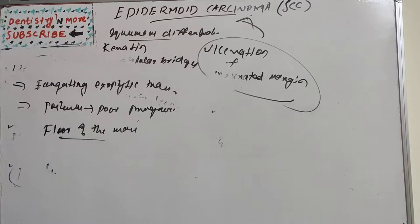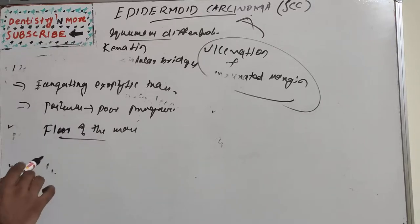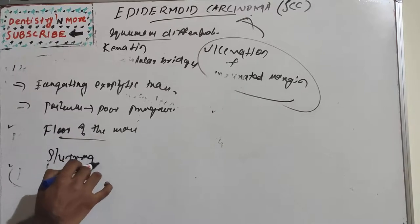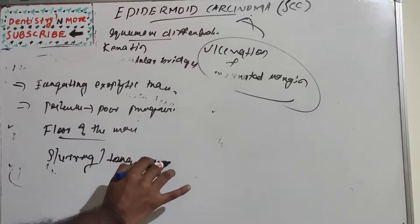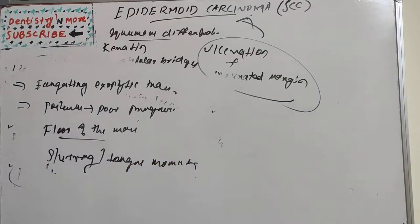Carcinoma of the floor of the mouth is associated especially with pipe or cigar smoking. It presents as an indurated ulcer of varying size situated on one side of the midline, more frequently on the anterior portion. It may cause early extension into the lingual mucosa of the mandible, tongue, or submaxillary and sublingual glands. It may produce limitation of tongue movement or slurring of speech. Contralateral metastasis is common as the primary lesion often occurs near the midline. Radiation therapy gives better results than surgery.